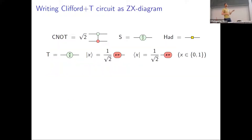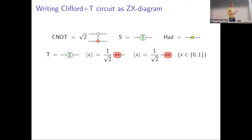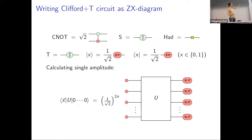Let's get to the first step: writing our Clifford-plus-T circuit as a ZX diagram. We've seen CNOT, S-gate, T-gate. The Hadamard is written as a yellow box; you can take an Euler decomposition of it — Z rotation, X rotation, Z rotation — so it decomposes into spiders, but it's more convenient to keep the special notation. We have a cat X notation where X is 0 or 1, giving either zero phase or π phase. For simulation, I care about calculating amplitudes — for instance, the amplitude of observing a computational basis measurement x on U applied to |0⟩ — which can be represented as a ZX diagram with no inputs and no outputs, since we're calculating a number.